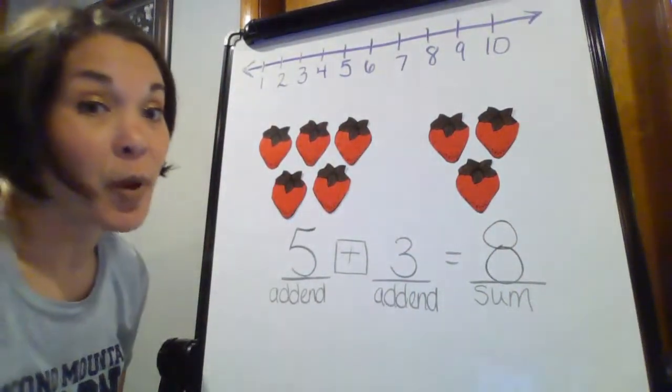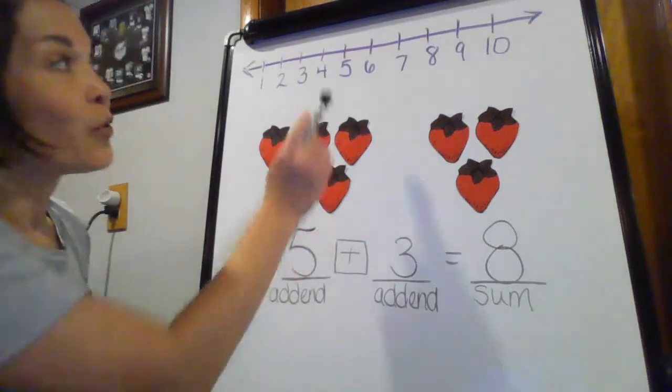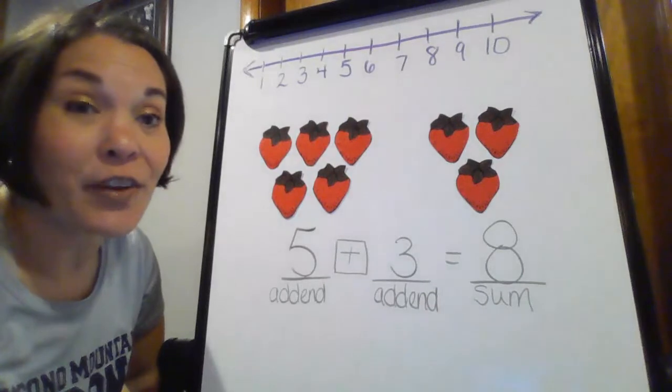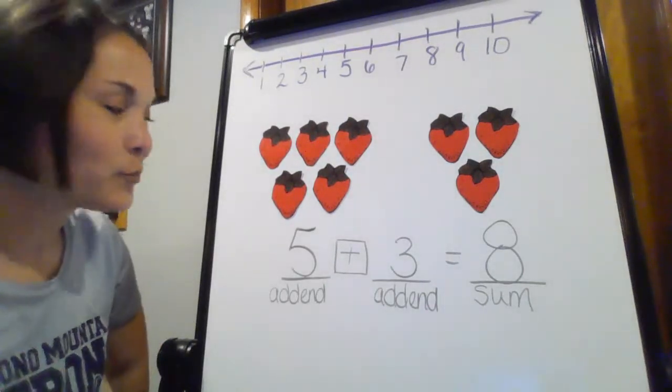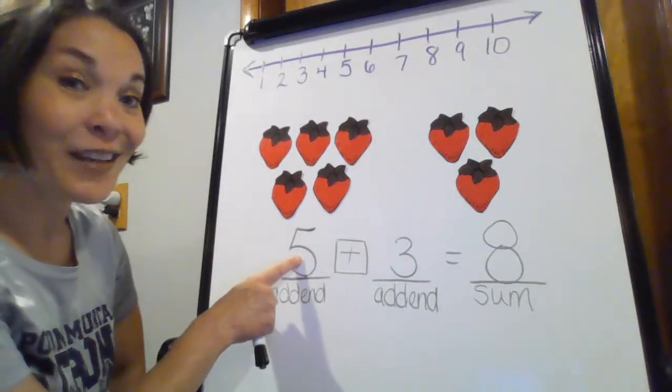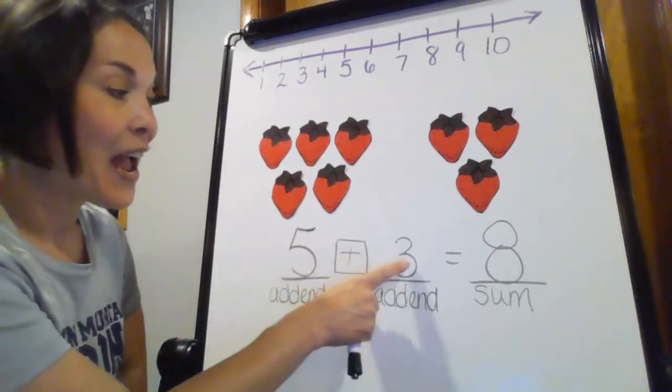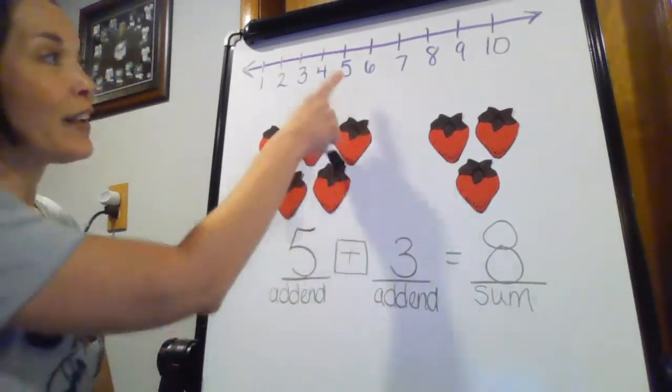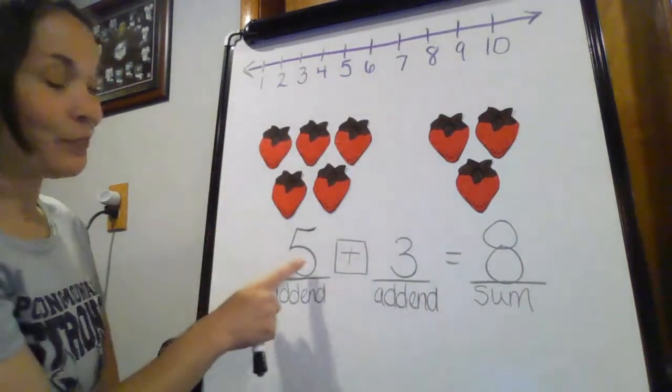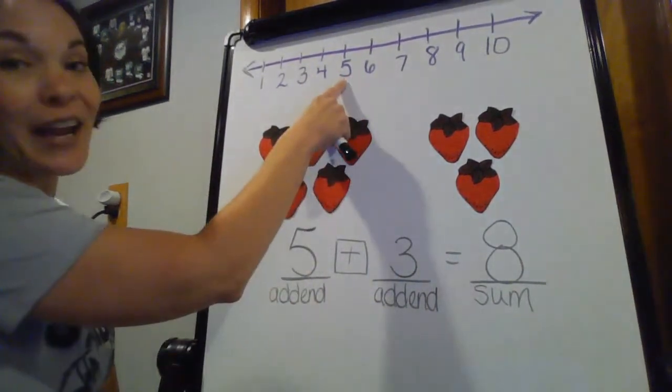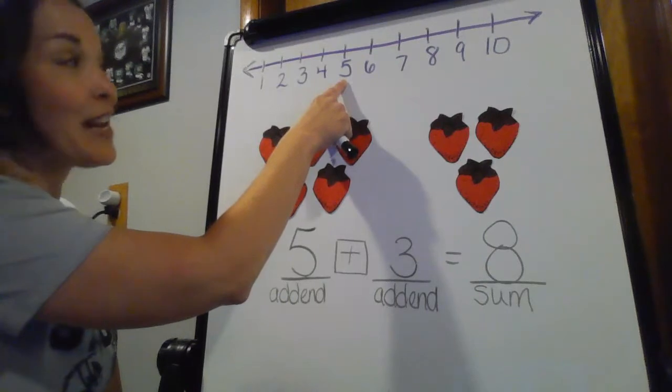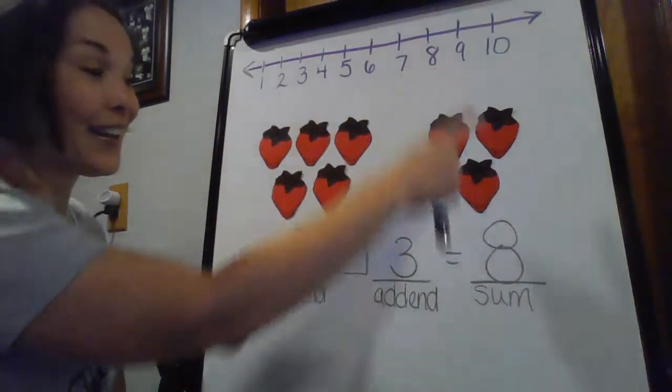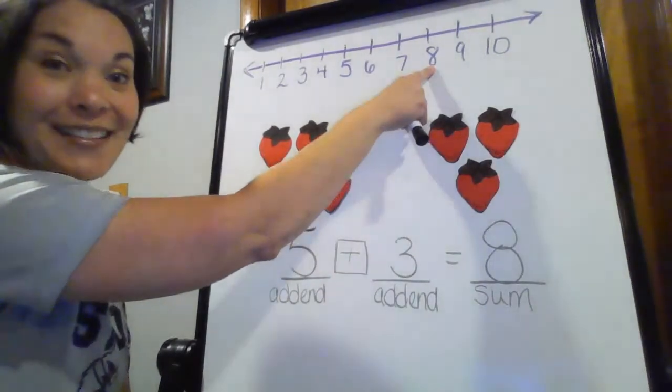Well, remember that other strategy? Remember using that number line? Remember using the strategy of counting on? Well, I'm going to start my big number. How many am I going to count on? Three. So, let's start with my five. Then, I'm going to count on three more. Ready? One, two, three. Look, I got my eight. There it is.